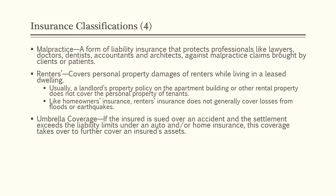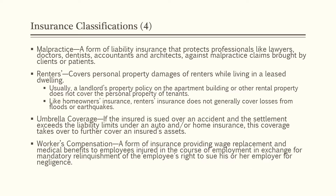Then there's umbrella coverage. If the insured is sued over an accident and the settlement exceeds the liability limits under an auto and/or home insurance policy, this coverage takes over to further cover the insured's assets. Umbrella policies are secondary insurance, meaning coverage kicks in after the auto or home insurance policy limits have been reached. Finally, there's workers' compensation. This is a form of insurance providing wage replacement and medical benefits to employees injured in the course of employment, in exchange for mandatory relinquishment of the employee's right to sue their employer for negligence.